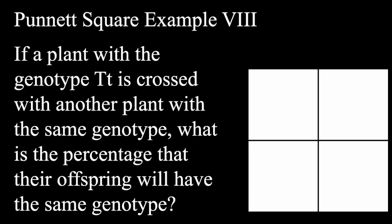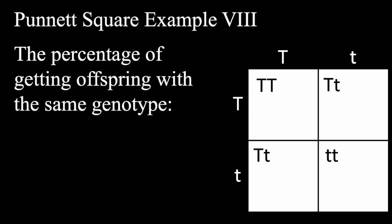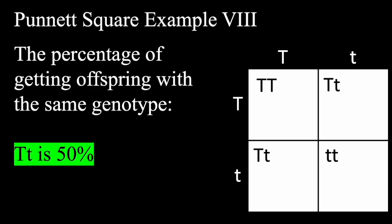If a plant with the genotype of heterozygous T is crossed with a plant with the same genotype, what's the percentage that their offspring will have the same genotype? We put heterozygous at the top and the same heterozygous alleles on the left-hand side. When we cross, we have one homozygous dominant, two heterozygous, and one homozygous recessive. The question asks what percentage of the offspring will have the same genotype as the parents. The parents are heterozygous, so there's a 50% chance that the offspring will be heterozygous.